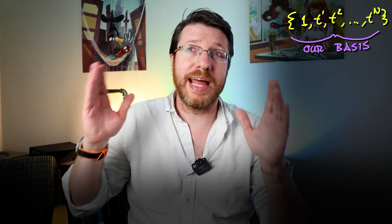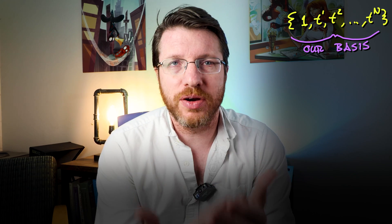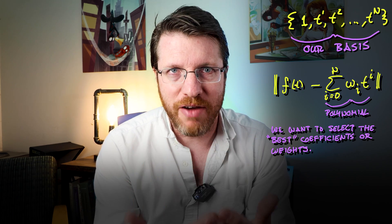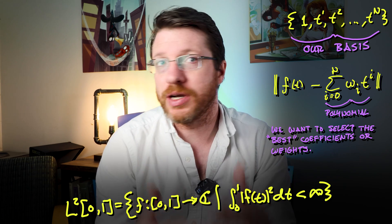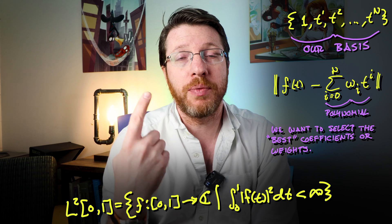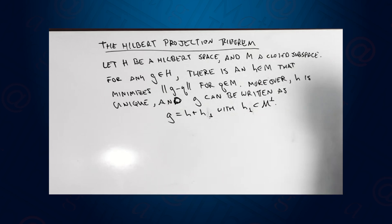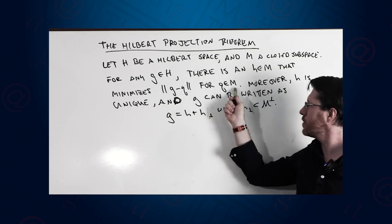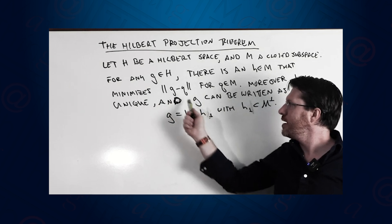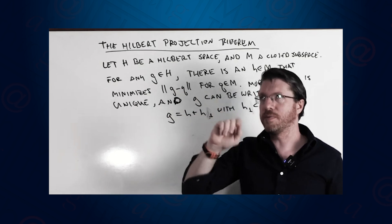We're going to start with a monomial basis going from 1 up to x to the n, and we're going to look for the best linear combination that approximates f with respect to the L2 norm. The Hilbert space theory and the projection theorem guarantee two things: one, that we can find this approximation, and two, that it is unique. The Hilbert projection theorem is about finding the point inside a closed subspace of a Hilbert space that is closest to our function.